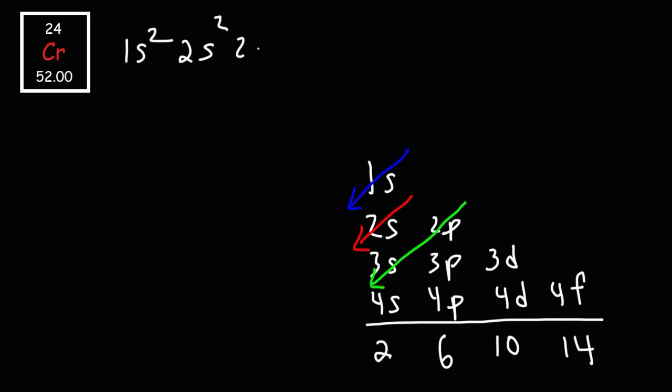It's going to be 2S2, and then 2P6 followed by 3S2. After 3S, it's 3P, then 4S. So it's going to be 3P6, 4S2.